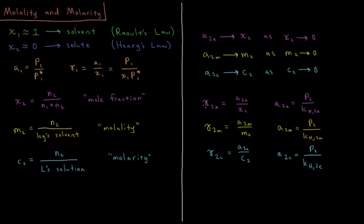Then all of these have their own activity coefficients. γ₂χ equals a₂χ over χ₂, which is equal to the vapor pressure divided by its Henry's Law coefficient according to mole fraction. The activity coefficient in terms of molality is equal to the molality activity divided by the molality, which is equal to the vapor pressure divided by its Henry's Law coefficient for molality. Finally, the activity coefficient for concentration of the solute is equal to the activity based off molarity divided by the molarity, and the activity for molarity is equal to the vapor pressure divided by the Henry's Law coefficient in terms of molarity.